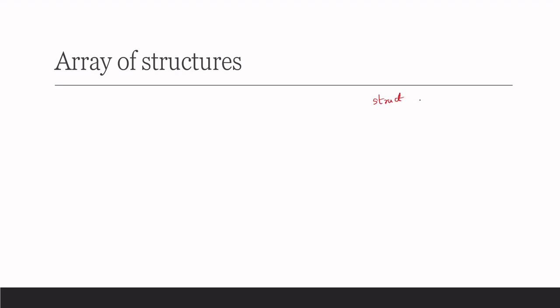In the last topic, we discussed about a simple structure. We will check the example — struct student — which we were discussing in the last example. Struct student has one variable for roll number, say int r_number, then float marks. Let us assume we have three subjects, so we can give float one for physics, one for chemistry, and one for maths. So you have four variables: one for roll number and float variables for physics, chemistry, and maths. We enclose it in curly brackets with a semicolon. This is how we define a structure.